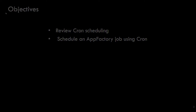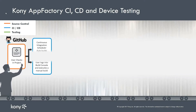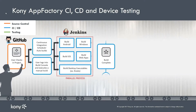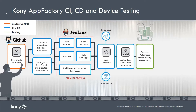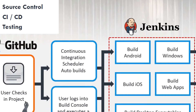Kony AppFactory has two scheduling mechanisms you can use to plan your builds. The first mechanism uses cron format to schedule jobs. The second mechanism lets you place a watcher on your repository to detect commits and build code based on when a user commits to a branch you are watching. This video will focus on scheduling jobs with cron.